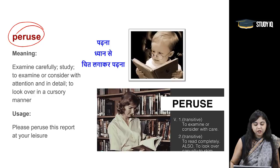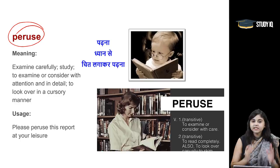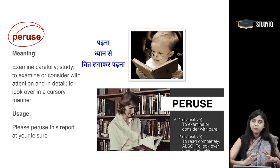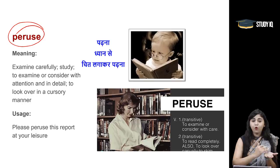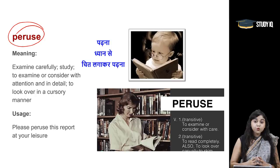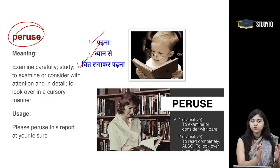Moving on to the next word: peruse. Peruse shabd — yaha par aapko yaad rakhna hai ki iska pehle exact meaning jo tha, wo tha to thoroughly examine something. Jo aap achi tarah se kisi chiz ka adhyayan karte hai, uske liye peruse shabd ka prayok kya jata tha. Lekin ab iska informal jo arth hai, wo zyada prachalit ho gya hai. Or informal jo iska arth hota hai, wo iska opposite hai — casually kisi chiz ko dek lena. Those are the two important meanings of the same word peruse, and both are actually opposite to each other. So: padhna, dhyaan se padhna, chit laga kar padhna — ye toh ek arth ho jata hai peruse ka.